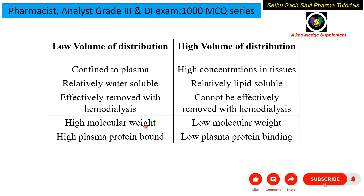Higher molecular weight drugs are usually in the low VD category, confined to plasma, while low molecular weight drugs can enter the tissue compartment and show higher VD values. Drugs with low VD show high plasma protein binding — albumin, globulin, alpha-1 glycoproteins — while drugs distributed to tissue show lower plasma protein binding but higher tissue protein binding.